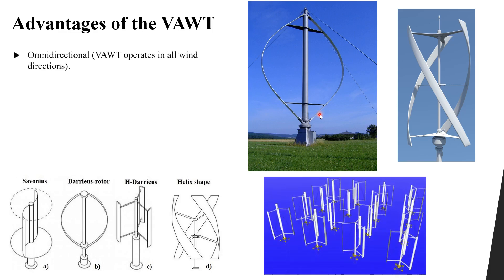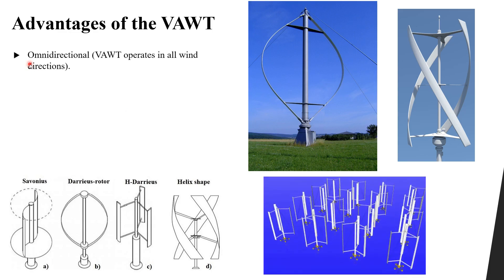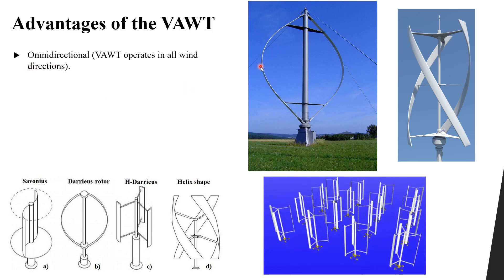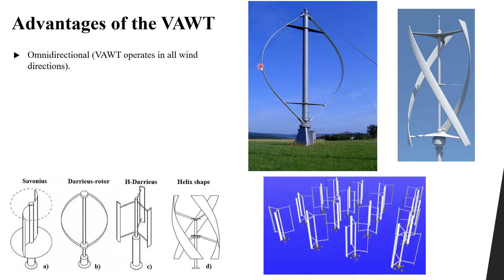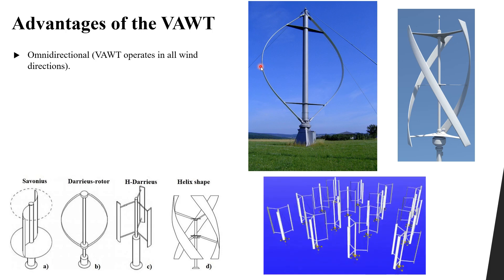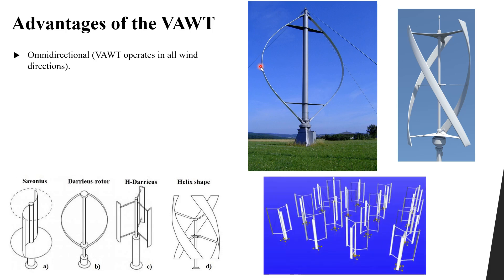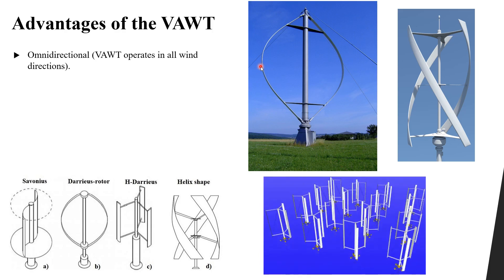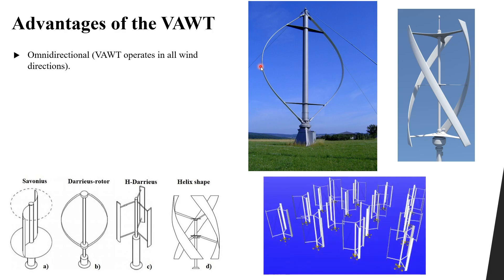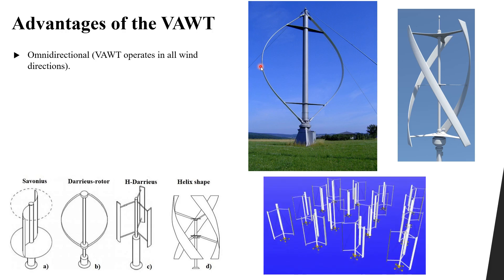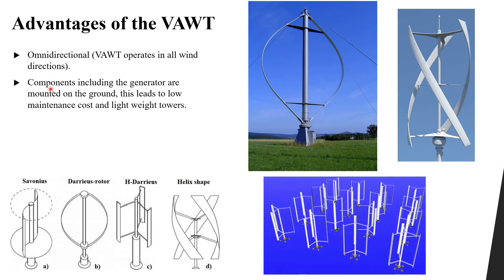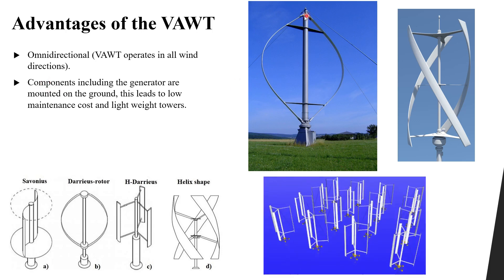What are the advantages of using the vertical axis wind turbine? The first thing is that it is omnidirectional, which means it operates in all wind directions. Whatever the direction of the wind, it will generate power — it does not need to adjust to the direction of the wind.